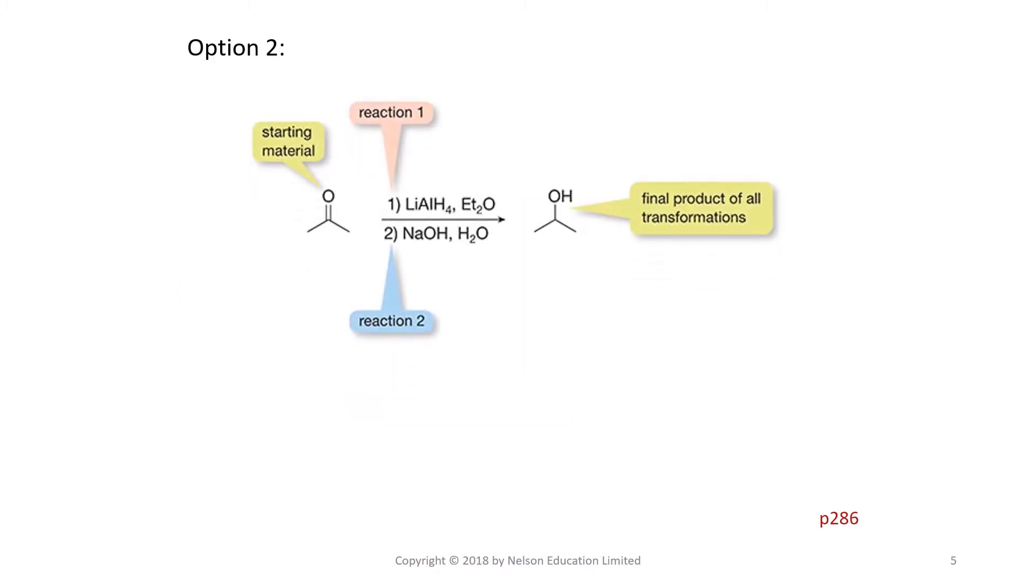Option number two. This is the most compact representation of sequential reactions. The main organic functional group is the sole reactant on the left. The reaction order sequence is written with the reagents and conditions above and below the arrow that are used to transform the reactant into the desired product.